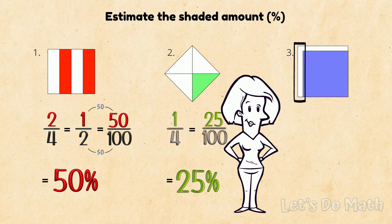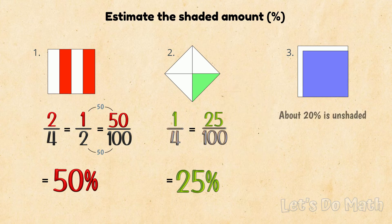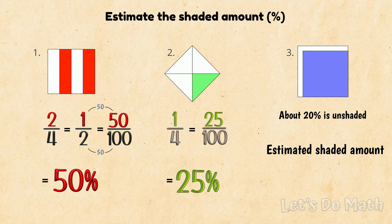This part looks like a column of 10. And this part looks like a row of 10. And together, they're about 20%. So that tells me my estimated shaded amount must be approximately 80%!